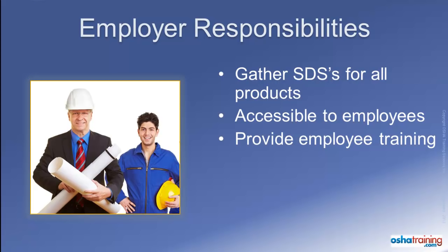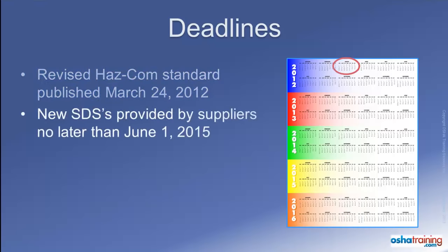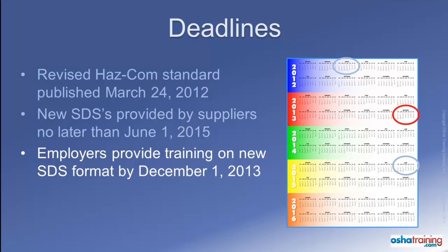Speaking of deadlines, here is an overview of some very important dates. The Revised Hazard Communication Standard, which requires the use of GHS-compliant safety data sheets, was published on March 24, 2012. Manufacturers and distributors of hazardous chemicals and products have until June 1, 2015 to begin distribution of the new safety data sheets. However, many of them have already started providing safety data sheets that meet the new format. Therefore, OSHA requires employers to get a head start and begin training all their workers on how to read and understand the new safety data sheets, and they have until December 1, 2013 to get that training complete.